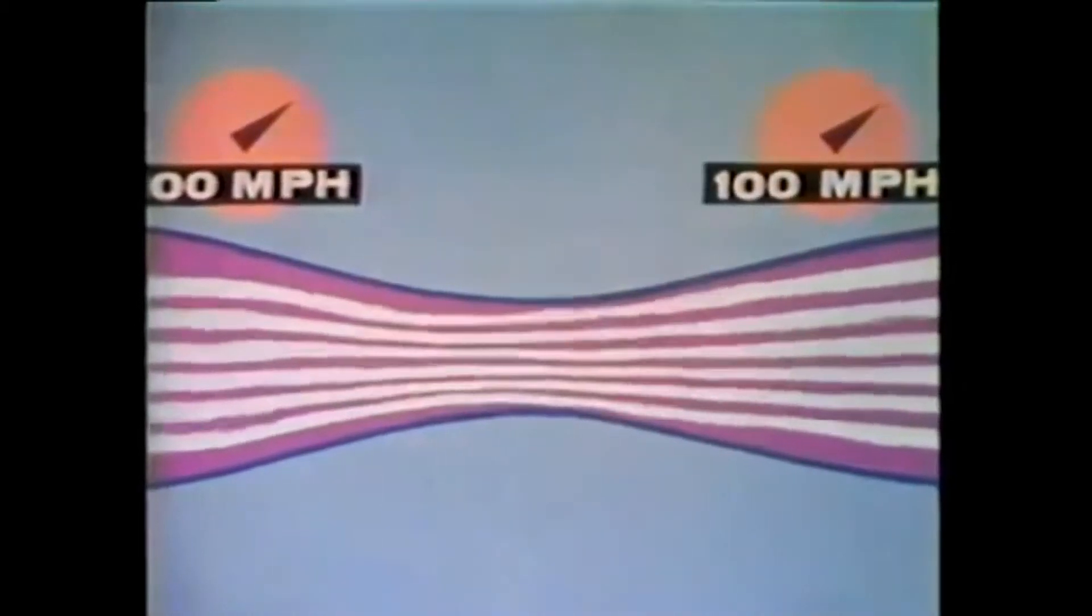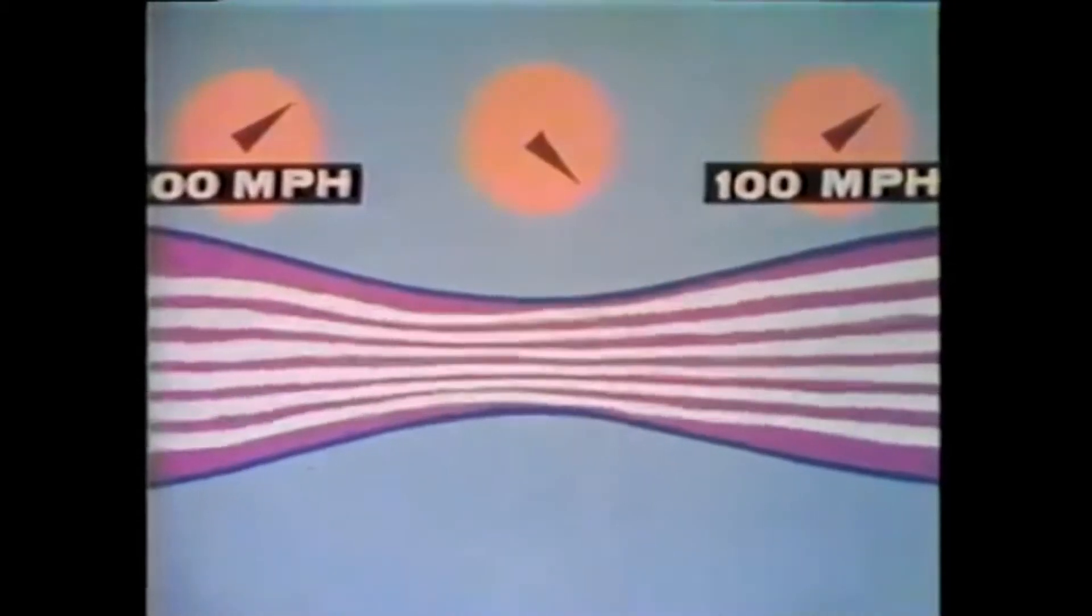What we find is that when the airspeed is 100 miles an hour at the entrance of the device, it is also 100 miles an hour at the exit. Yet, at the same time, the speed at the narrow part is considerably higher. It can easily be understood, therefore, that the air increases in speed as it passes through the smaller opening.